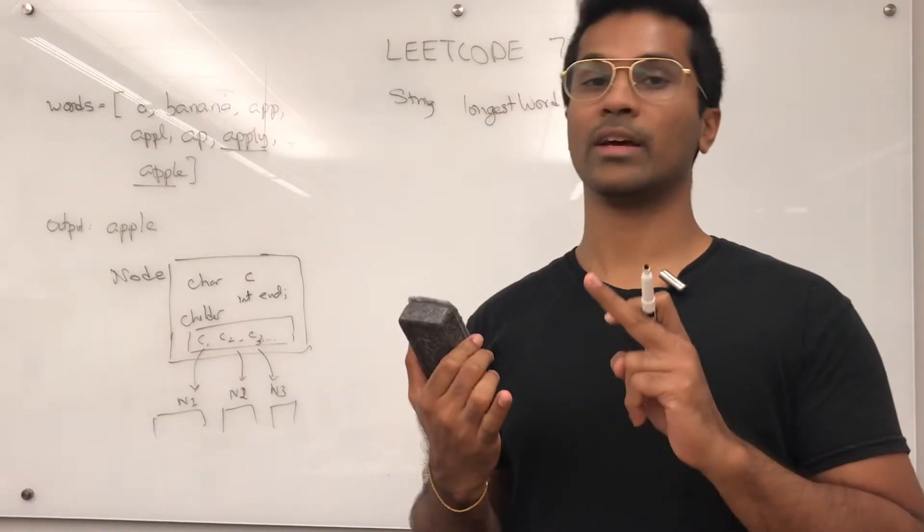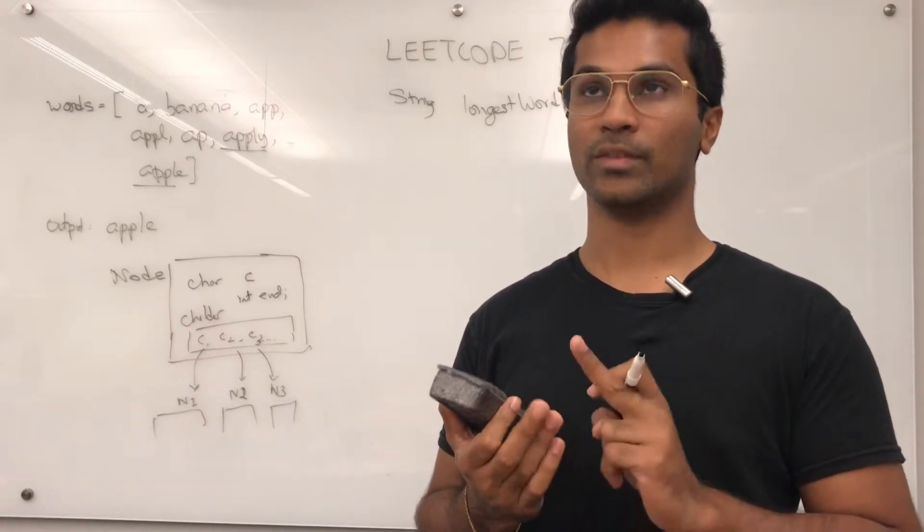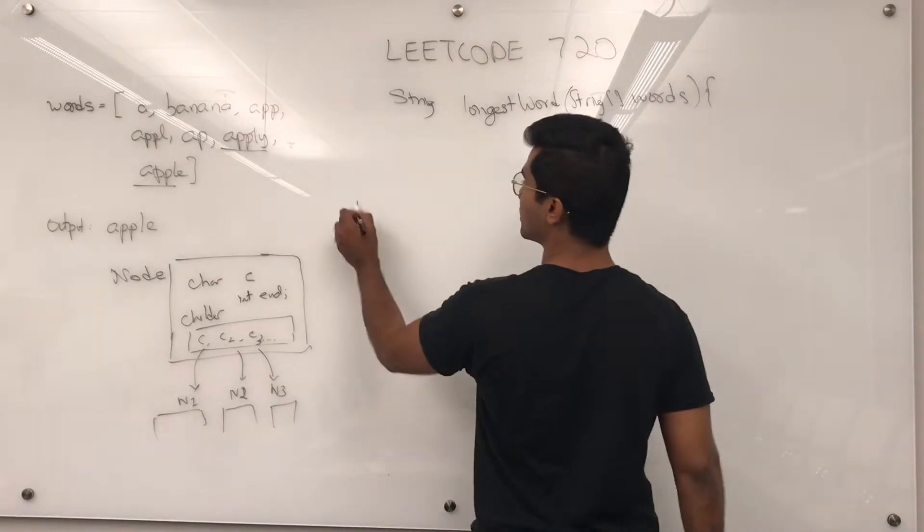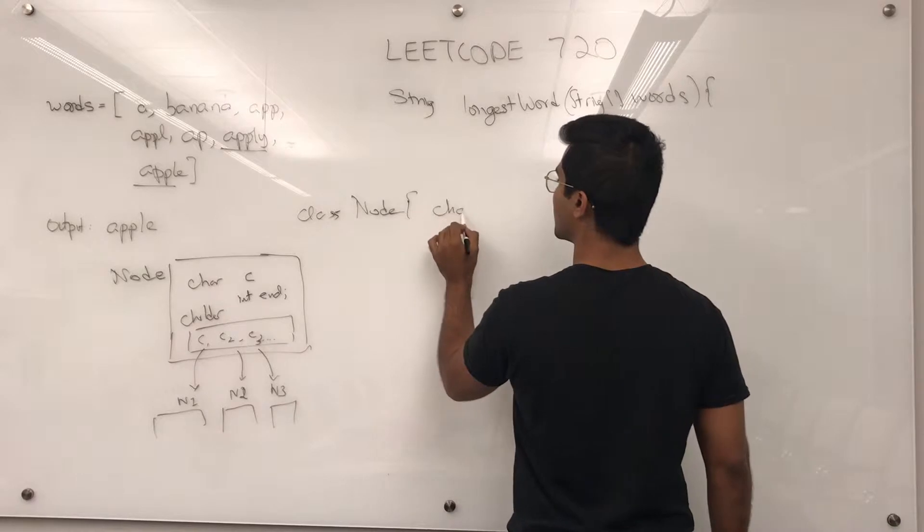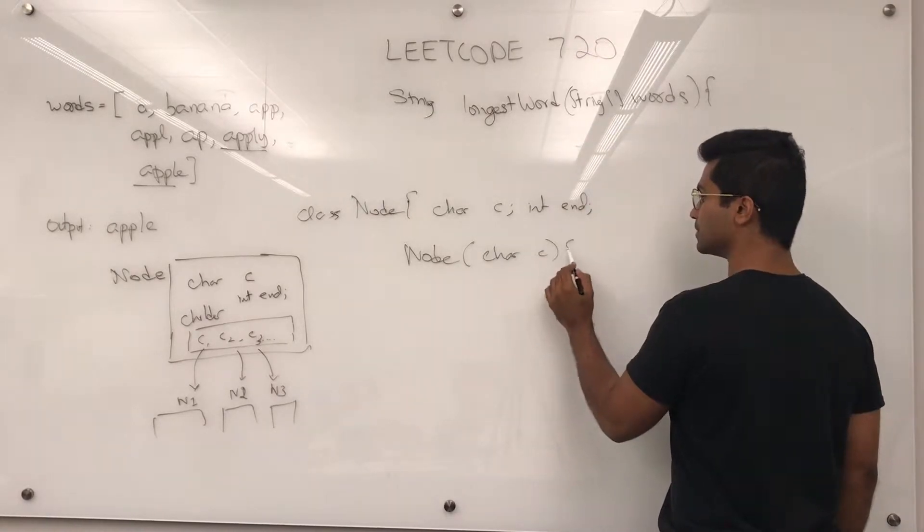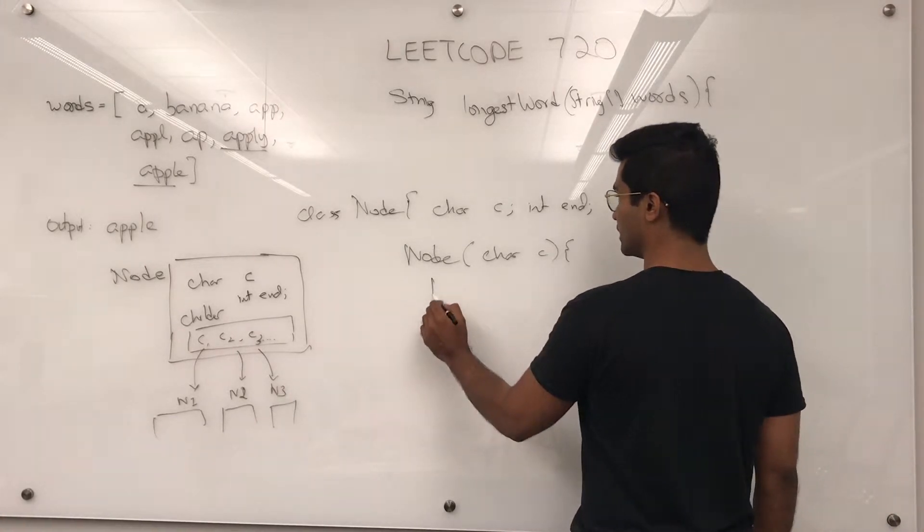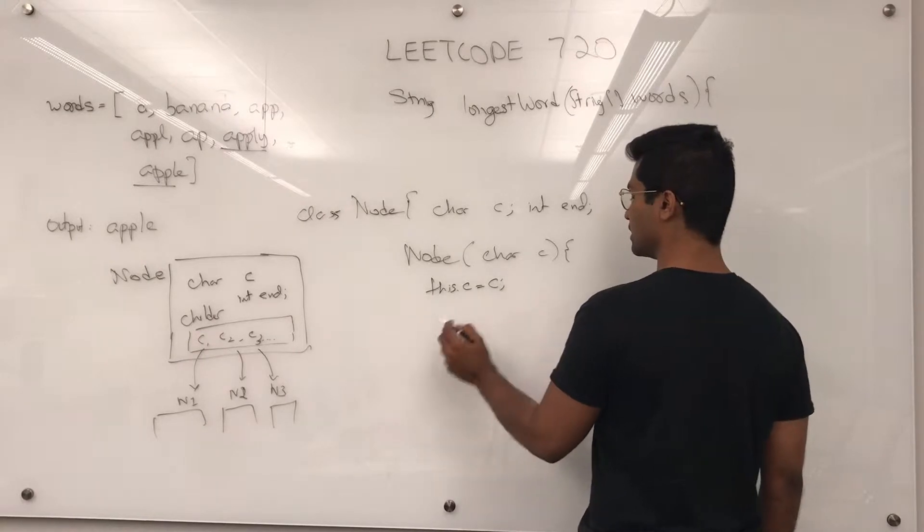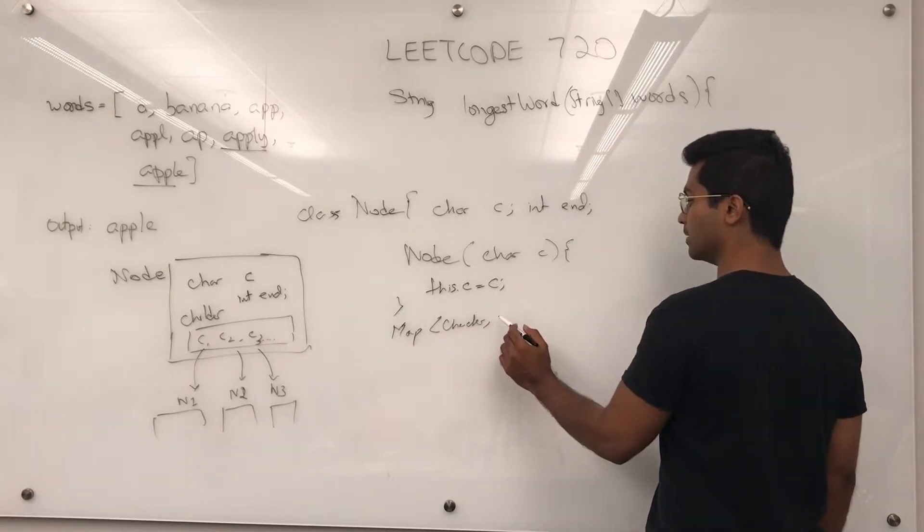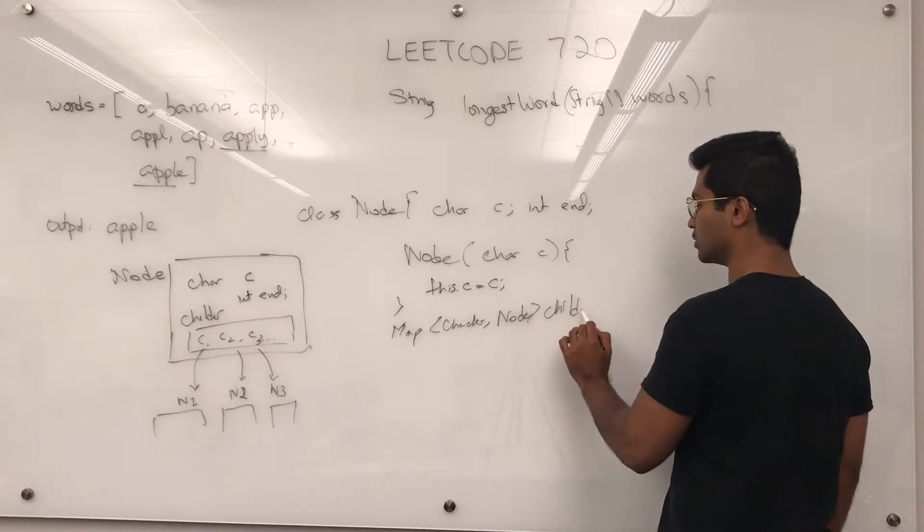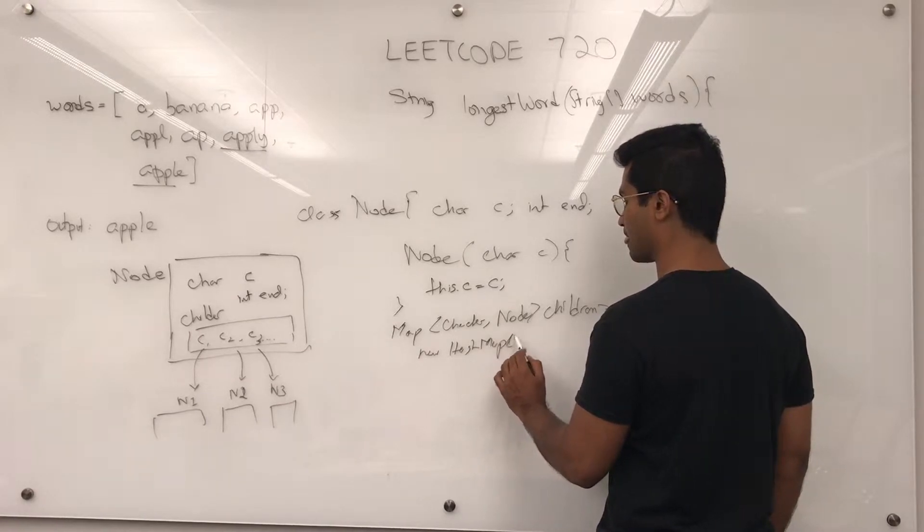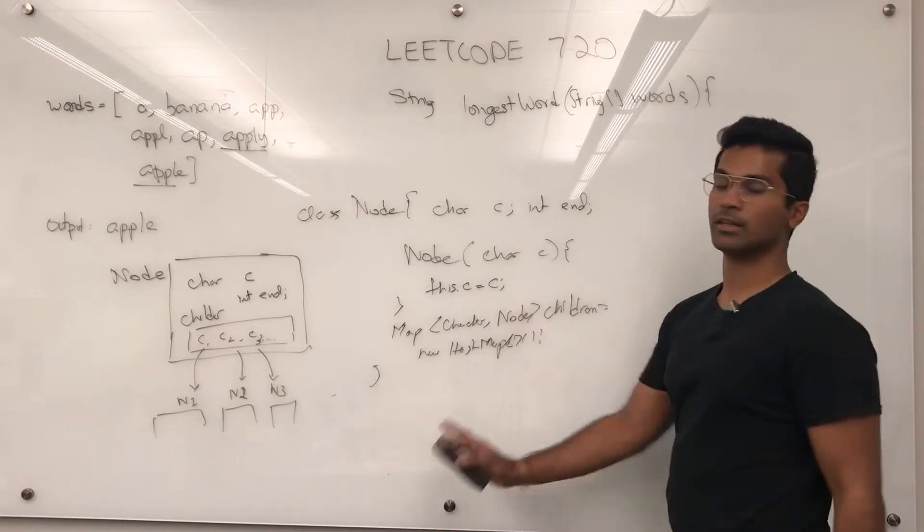I'm going to present it first by writing up the class for node and then trie and then the different methods in that. And then I'll use the trie to write the solution for the longest word. So node class is going to look like this. Character C, int end. Node, we're just going to pass in a character C. And this is going to be this.C = C. And we're also going to have a map of character and this is going to have a value of node. We're going to call it children and we can have a new hash map.